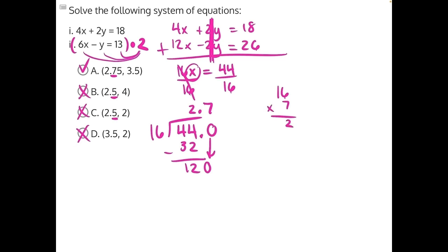6 times 7 is 42. 7 times 1 is 7 plus 4 is 11. So we have 112 minus, we'll have 80 left over. And we just did that math. 16 goes into 80 5 times evenly with no remainder. So our answer here, x is going to be equal to 2.75.